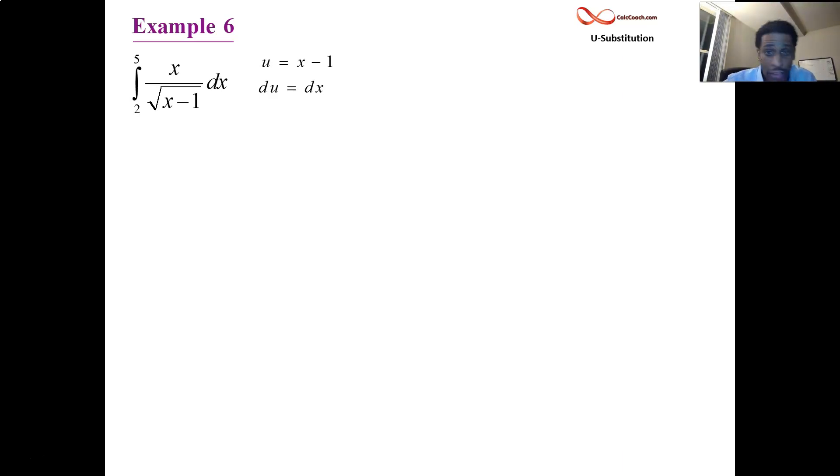There's bounds, right? Two and five. Let's go ahead and switch those bounds. So we're going to have an organized chart here. u is x minus one. Basically, you just take the x and subtract one from it. So five minus one, you get a four. Two minus one, you get a one. So your new bounds are going to be one and four. The old bounds were two and five.